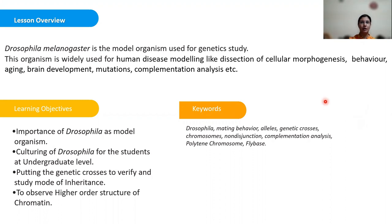Drosophila melanogaster, commonly known as the fruit fly, is one of the most commonly used model organisms in the field of biomedical sciences. It serves as an excellent genetic tool important for basic research. Because of the availability of numerous molecular tools, it has allowed this model organism to be used for human disease modeling, including dissection of cellular morphogenesis, behavior, aging, brain development, mutations, complementation analysis, etc.